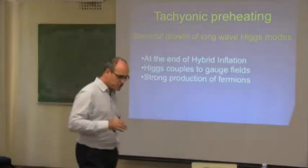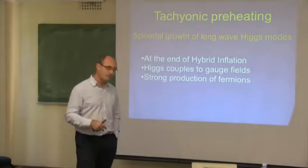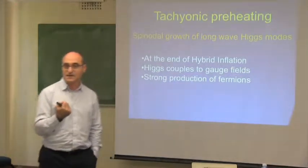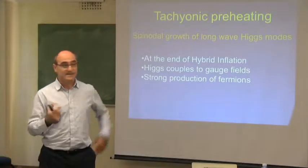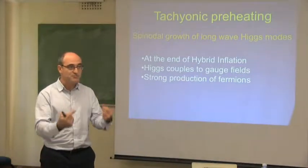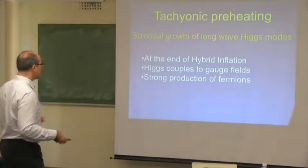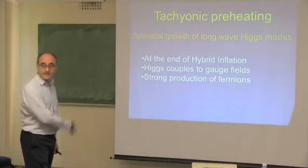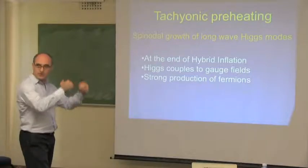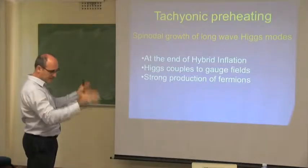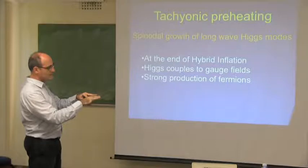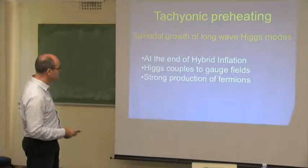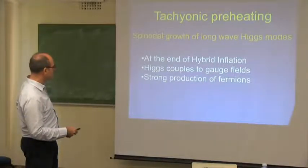Tachyonic preheating has features which are very different from what I have just described. Rather than having a scalar field which is oscillating, what happens here is that the field to which the inflaton couples acquires a negative mass term. Negative mass terms introduce instabilities which make modes grow exponentially, and therefore you will also have a very large production of particles. But they do not come because of subsequent crossings of the field φ through zero — but through direct production in less than one oscillation — very fast. This occurs in specific models of inflation different from the usual chaotic models: in hybrid inflation.